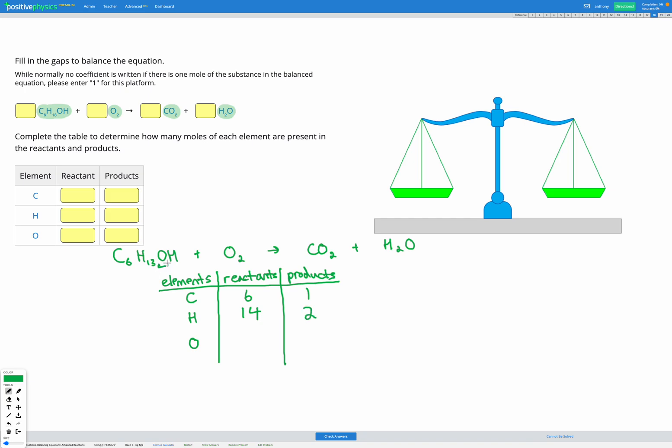For oxygen I've got one here in my hydrocarbon and two here in my O2, so that's a total of three in my reactants. And then afterwards I've got O2 in my CO2 and O in my H2O, so I've got three in total on the right hand side.